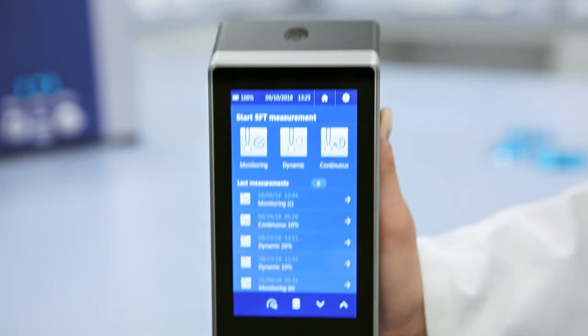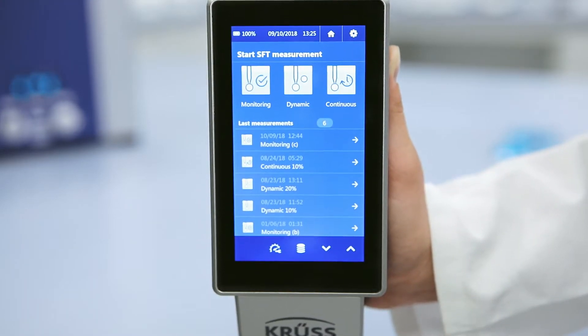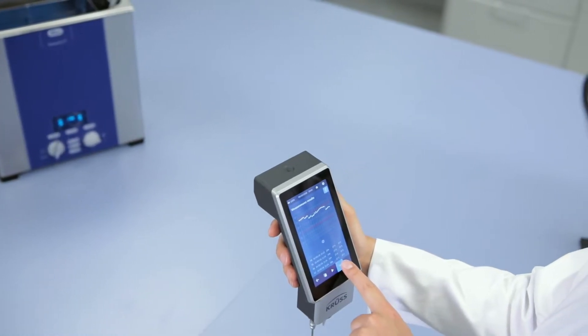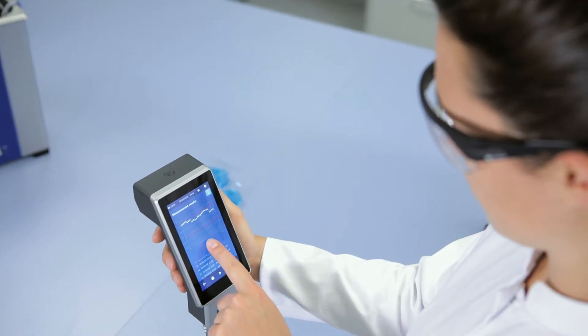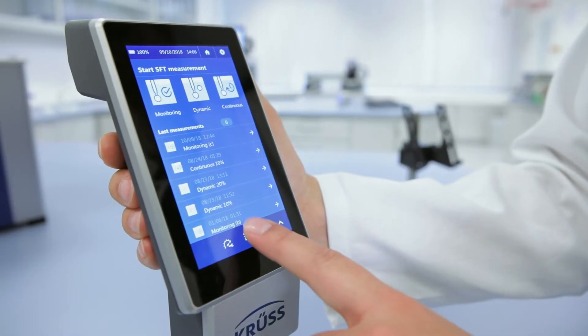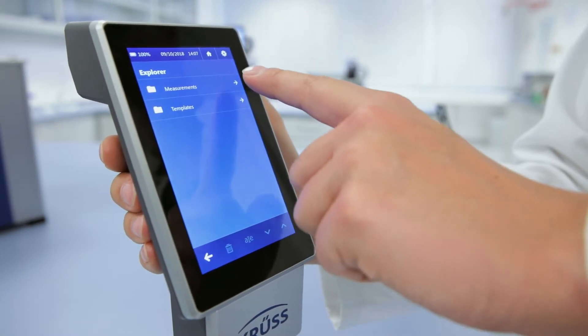The BPT Mobile software has a user-friendly interface and an intuitive navigation similar to that of a smartphone. This effectively rules out measurement errors due to incorrect operation.